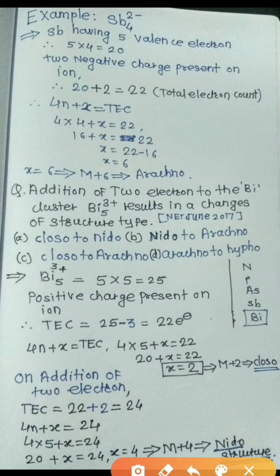Now let's see an example: Sb₄²⁻. Antimony has 5 valence electrons, so 5 multiplied by 4 equals 20. Two negative charges are present on the ion, so total electron count equals 20 plus 2, which gives a total electron count of 22.